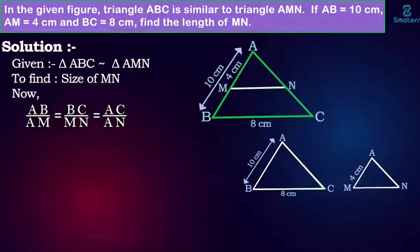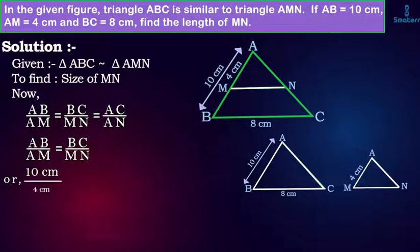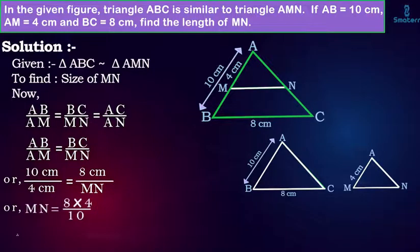We can use AB by AM equals to BC by MN. AB is 10 cm, AM is 4 cm, BC is 8 cm, and MN is unknown. Simplifying it, we get MN equal to 3.2 cm.